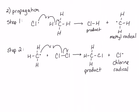You'll notice that each propagation step has a couple of things in common. The first is that we start with one radical in each case — either the chlorine radical or the methyl radical — and we end with a single radical. So our net loss of radicals is zero; we don't gain any and we don't lose any. The other thing these two steps have in common is that we produce products seen in the overall reaction: in step one, HCl, and in step two, chloromethane.